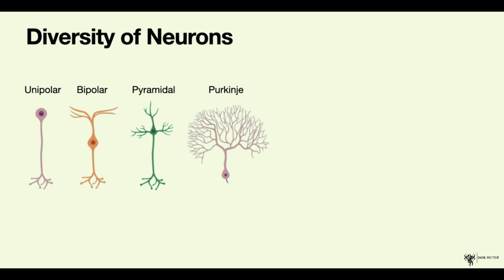By shape, we can distinguish different types of neurons. Unipolar neurons have only one process extending from their cell body, which is an axon. Bipolar neurons have two processes — an axon and dendrites. Pyramidal neurons feature dendrites both apically and basally, meaning near the cell body and at the top, in addition to a large axon.